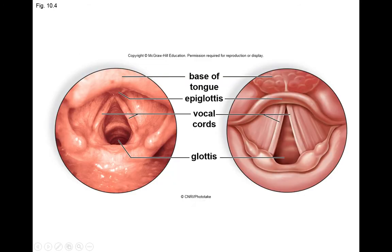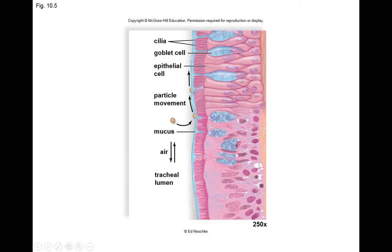If you look at the tissue that makes up the airways, it's a special type called pseudo-stratified ciliated columnar epithelium. The cells look like they're stratified, piled on top of each other — that's why they're called pseudo-stratified. They have cilia on the surface, and the cilia help move mucus upward toward the digestive tract so it can be swallowed, so that mucus with debris doesn't end up in the airways.